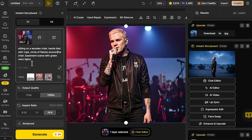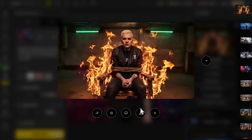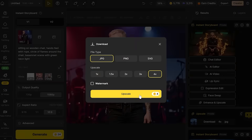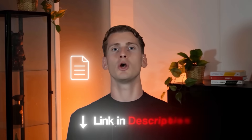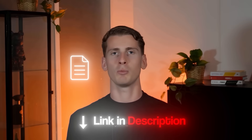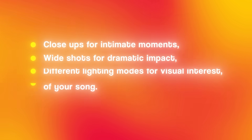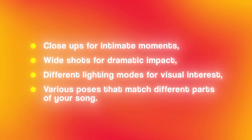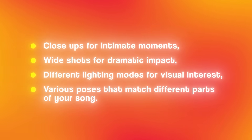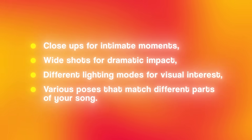I'm not going to show you how I created the other 10 scenes because it's the same process. But if you're curious about the prompts I used for the other scenes, I've added a free document in the description where you can check them out. The key principle for all scenes is variety in angles, lighting, and energy level. You want close-ups for intimate moments, wide shots for dramatic impact, different lighting moods for visual interest, and various poses that match different parts of your song. This variety keeps viewers engaged and gives you editing flexibility.